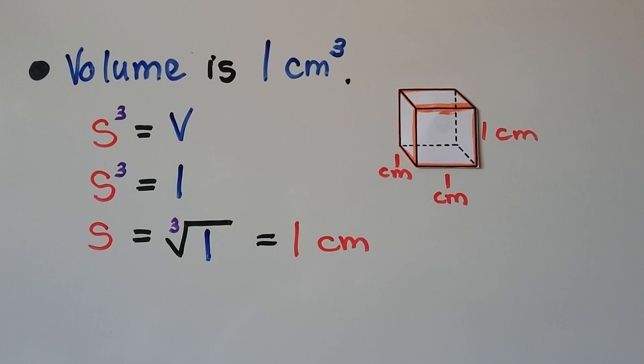If we're given a volume of 1 centimeter cubed, then we need to find the cube root of 1, which is 1 centimeter. It's 1 centimeter times 1 centimeter times 1 centimeter.